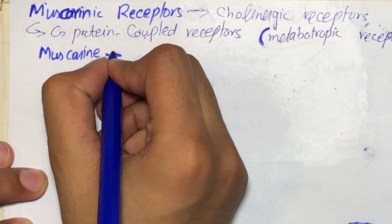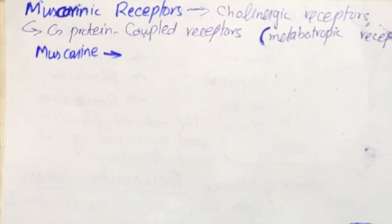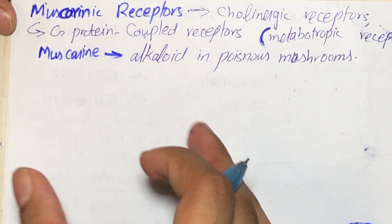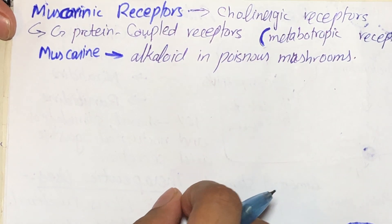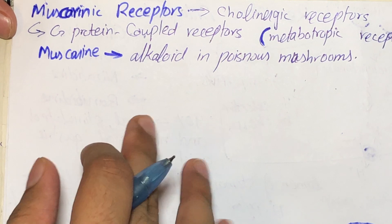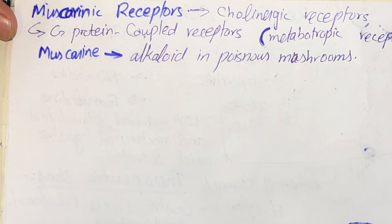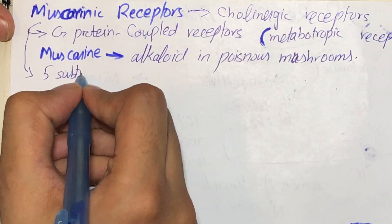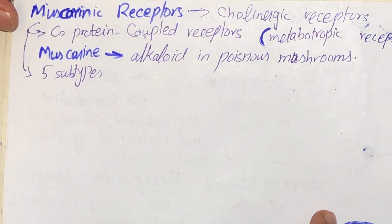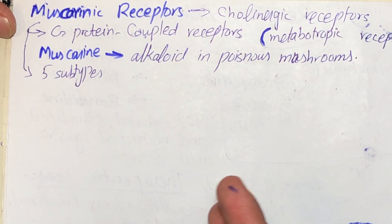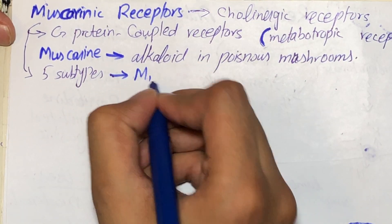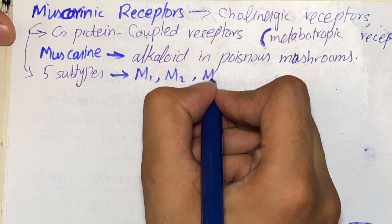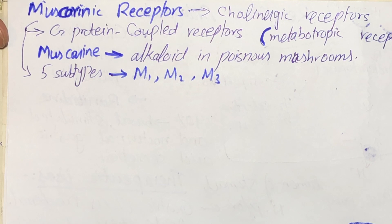This alkaloid is actually present in some poisonous mushrooms. Muscarinic receptors have very little affinity for nicotine, and therefore they are separated from nicotinic receptors on the basis of their affinity for these agents. These muscarinic receptors are actually of five subtypes, but only three of them are functionally characterized, which are M1, M2, and M3.